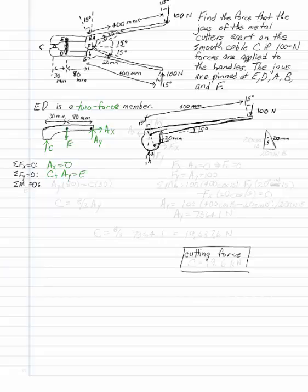And the sum of the moments at some point, say for example, point E tells me that A, Y times 80 equals C times 30. Well, that is somewhat useful. The C that I'm looking at is eight-thirds of A, Y.